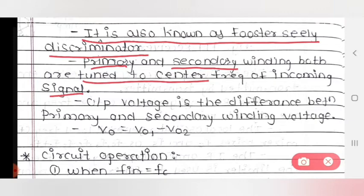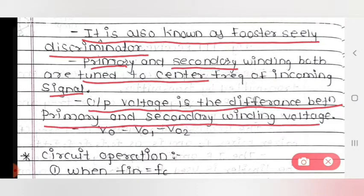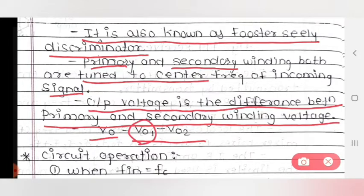Next point: output voltage is the difference between primary and secondary winding voltages. The output voltage V0 is equal to V01 minus V02, where V01 means primary winding voltage, V02 means secondary winding voltage, and V0 is the output voltage.